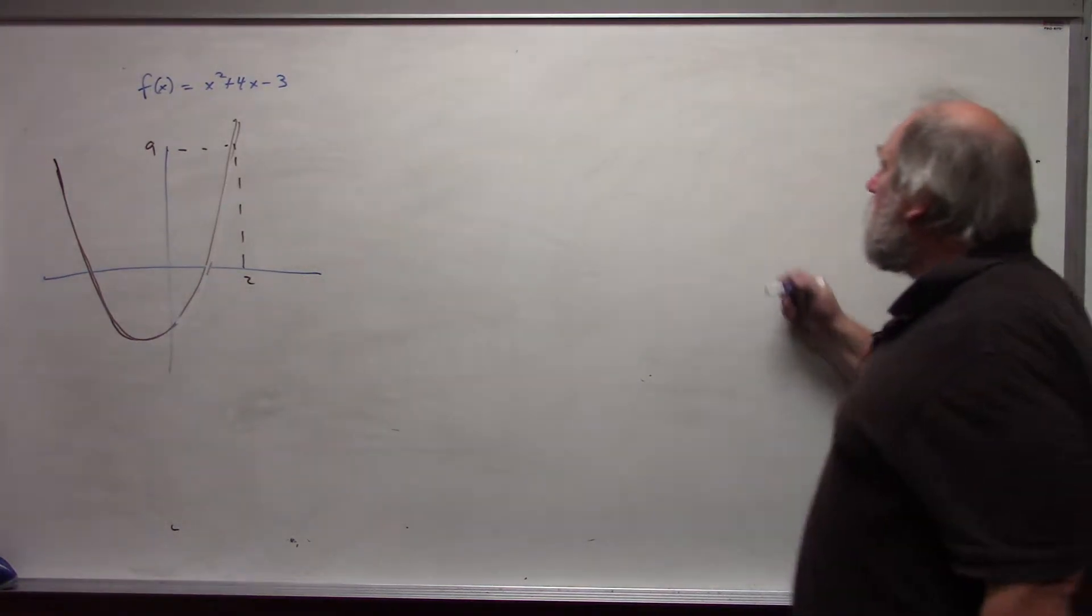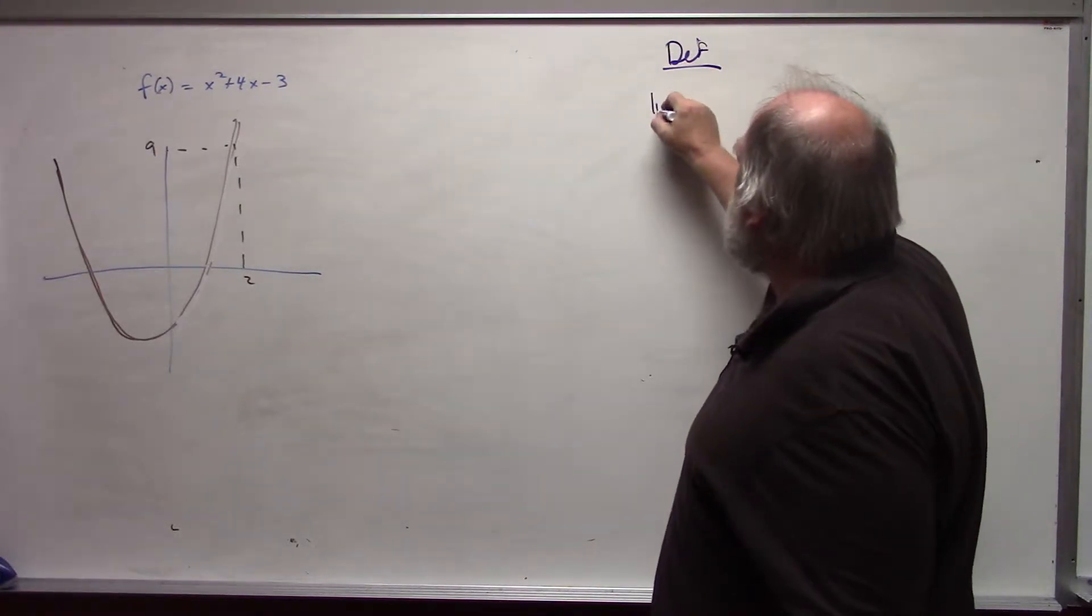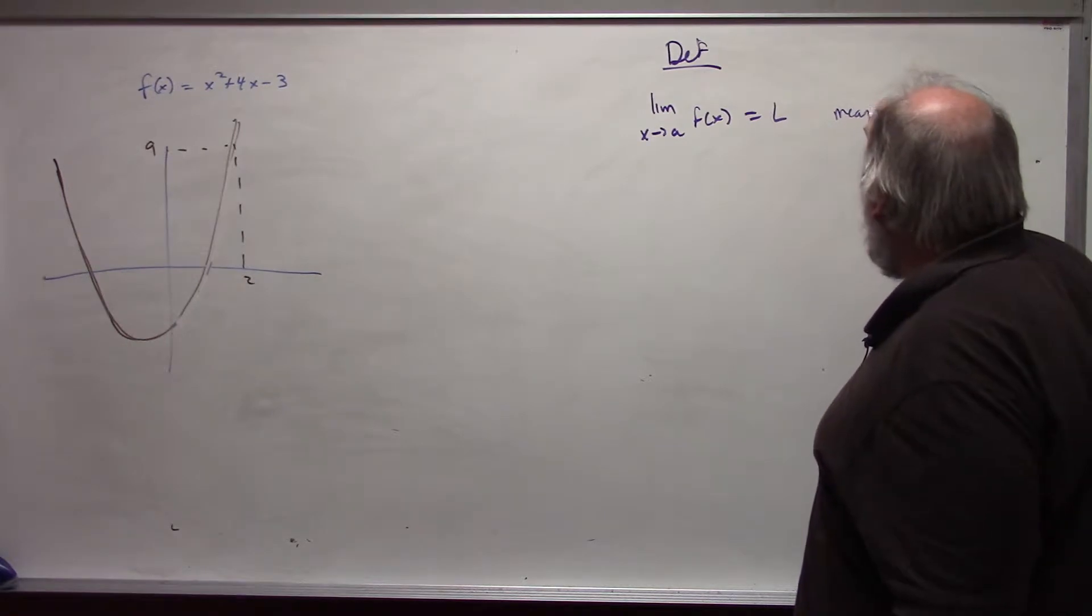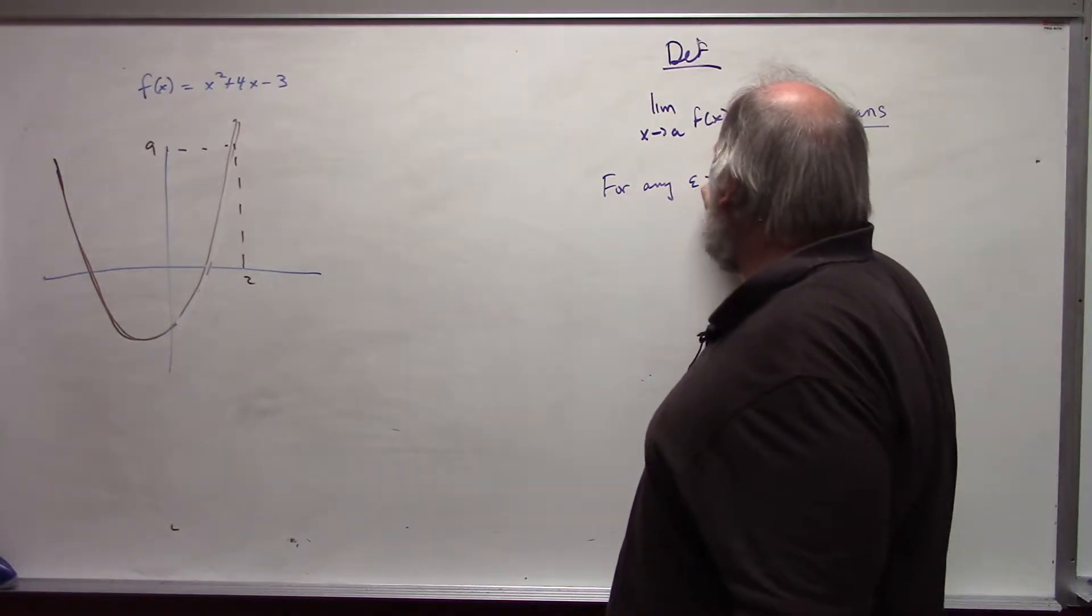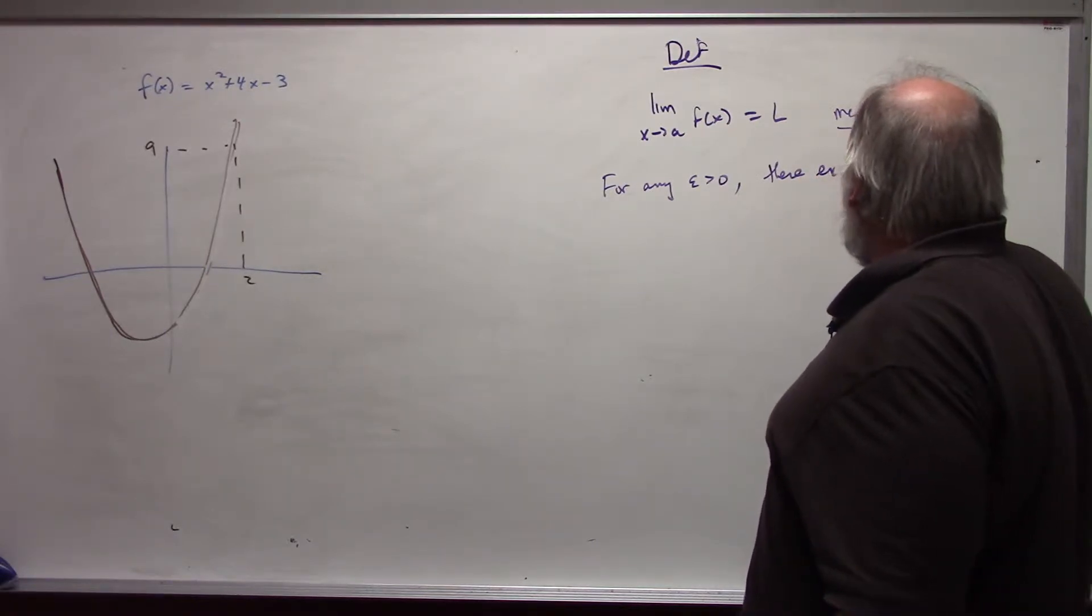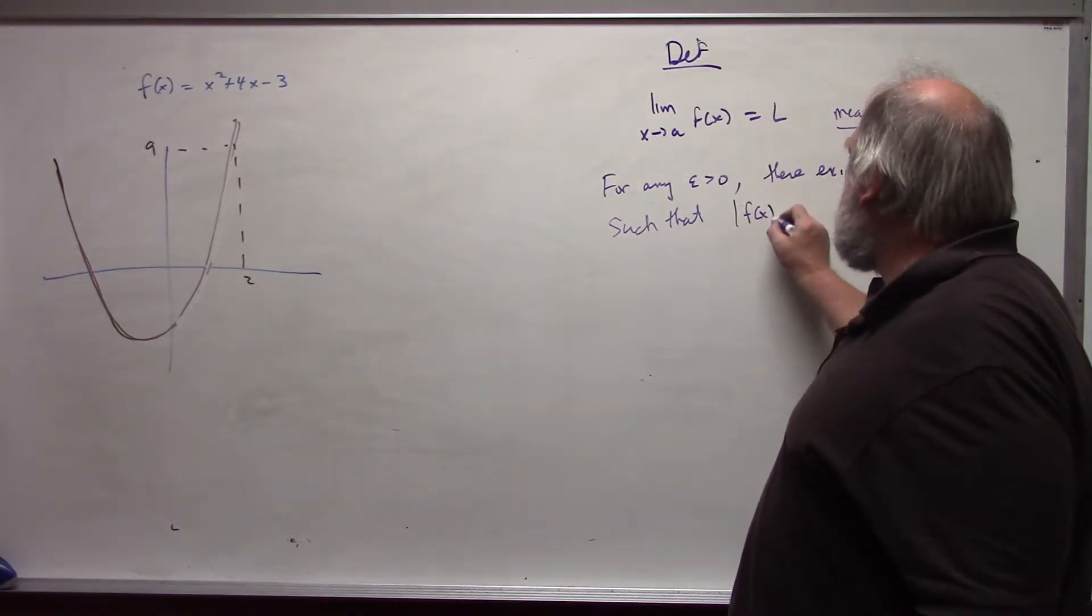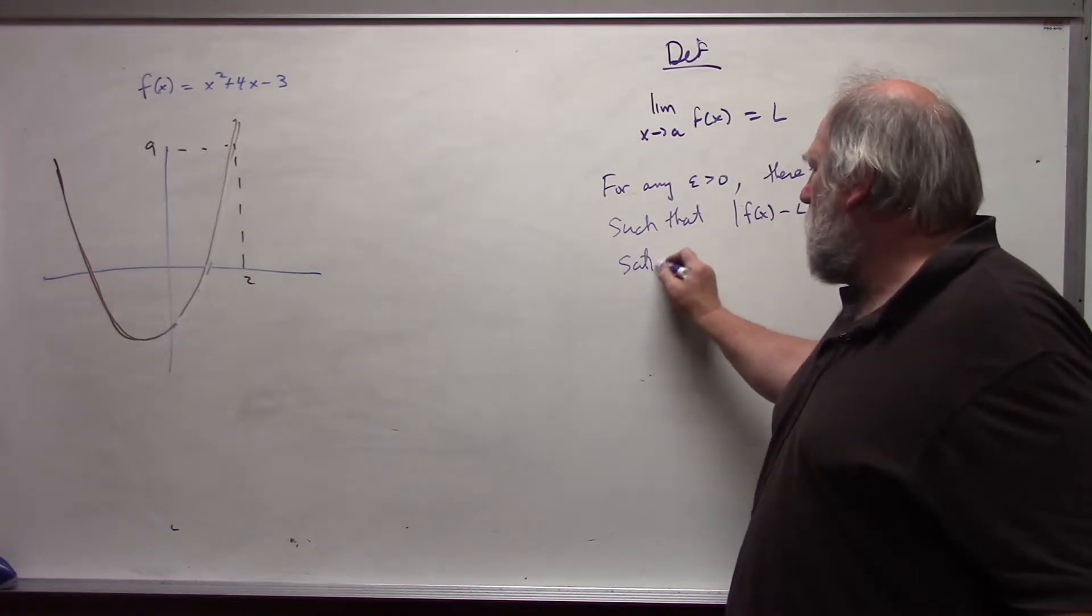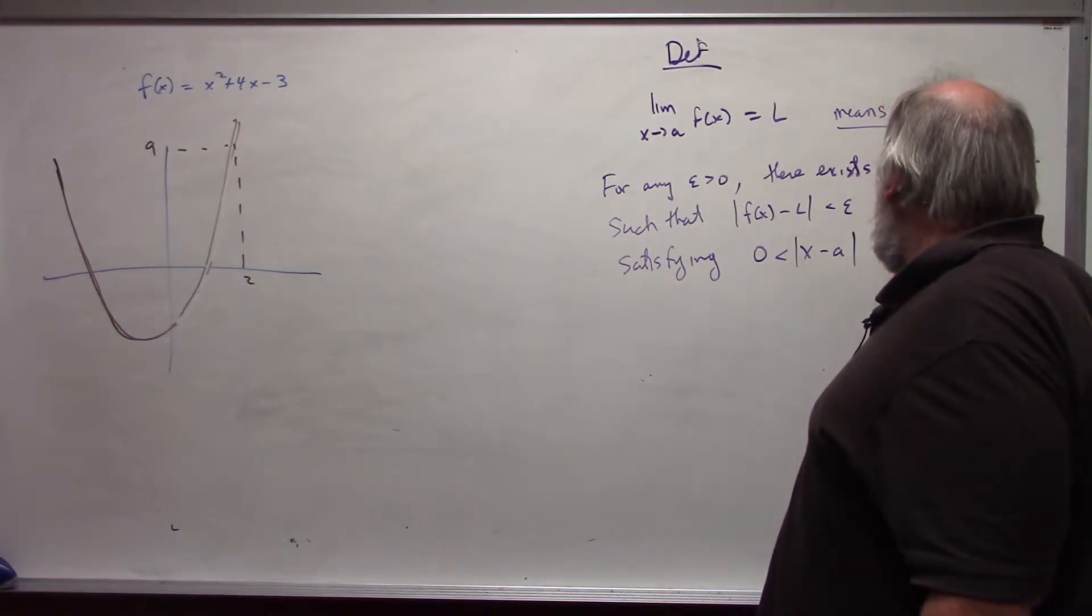The real math definition for limit: the limit as x approaches a of f of x equals l means, for any epsilon greater than 0, there exists delta greater than 0, such that the absolute value f of x minus l is less than epsilon for all x satisfying 0 is less than the absolute value of x minus a is less than delta.